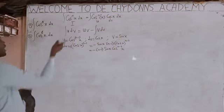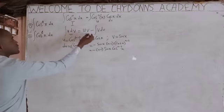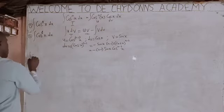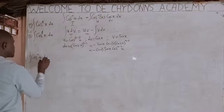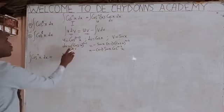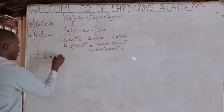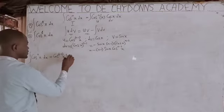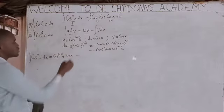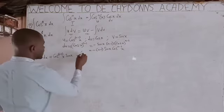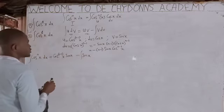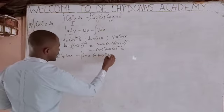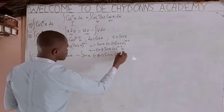We now plug it into the formula. Integration of cos^n(x) dx equals u times v minus ∫v du. Your u is cos^(n-1)(x), your v is sin(x). Then minus integration: your v is sin(x) again, and your du is minus (n-1) sin(x) cos^(n-2)(x).